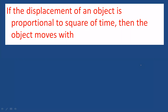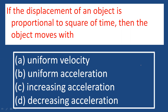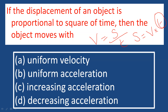The displacement of an object is proportional to the square of time — then the object moves with what? In uniform motion, distance equals speed into time, so time is to the first power. But in the second equation of motion, s = ut + ½at², displacement is proportional to the square of time, indicating uniformly accelerated motion.